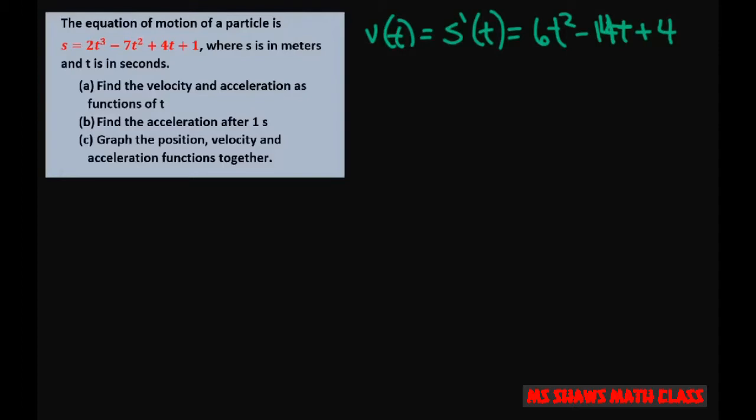Now your acceleration of t is just the derivative of your velocity. So take the derivative of that and you're going to get 12t minus 14.